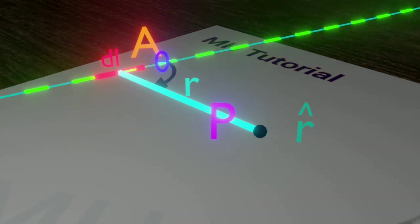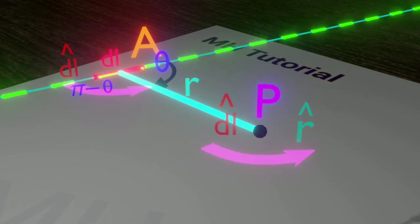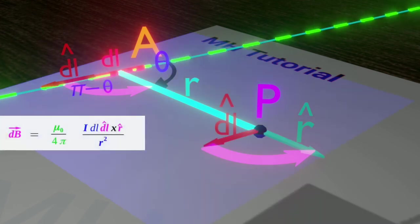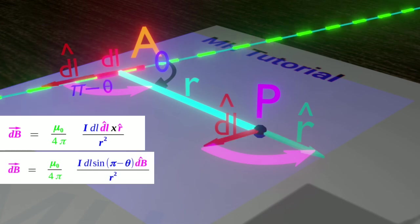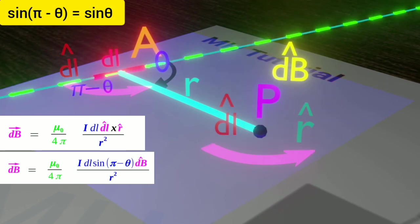In that case, the direction of DL will be opposite, and angle between them is π minus theta. Multiplying cap DL cross cap R, we get sin(π - θ) into cap dB. Sin(π - θ) is equal to sin θ.